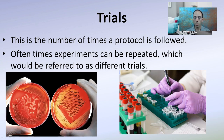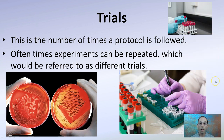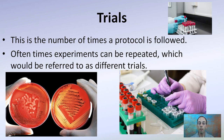Then we have trials — the number of times a protocol is followed. An experiment is not just done once. For example, we may grow plants in a greenhouse during summer months, then repeat that in the winter months keeping conditions the same. These repeated experiments are referred to as different trials, and you may see the average of trials reported.